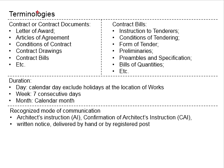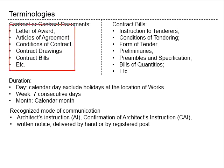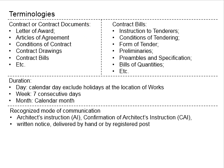First, we look at the contract or the contract documents. This refers to the list of documents including the letter of award, articles of agreement, conditions of contract, contract drawings, contract bill, and so on. The letter of award is a letter sent by an employer as a written confirmation that the tenderer has been successfully selected and will be awarded a contract. The articles of agreement provide the information of all the parties involved in the contract.